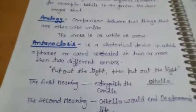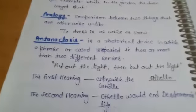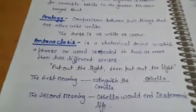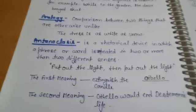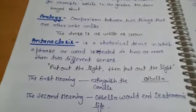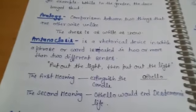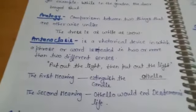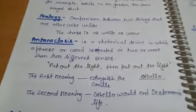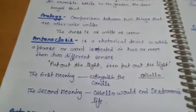Next: antanaclasis. Antanaclasis is a rhetorical device in which a phrase or word is repeated in two or more different senses. It means a phrase or word is repeated again and again, but the sense is something different each time — the words are the same but their meanings are different.